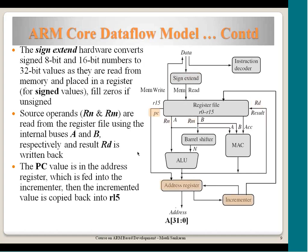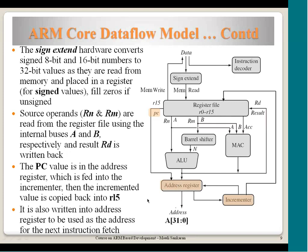Two source operands for any instruction — the A and B paths — are read through two read ports from the register file. The PC value gets read and latched, and the incremented value is written back. For example, if the PC holds address 1000, that goes out on the address bus; the incremented value 1004 gets written back in the next cycle into R15, so the processor can access the instruction stored at 1004.